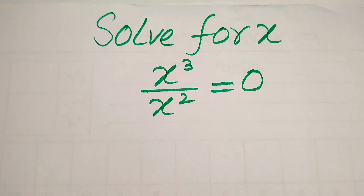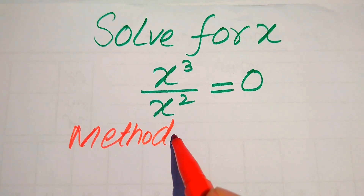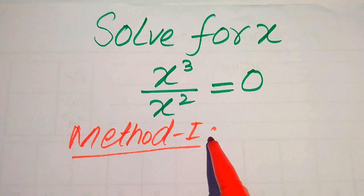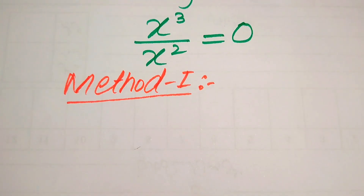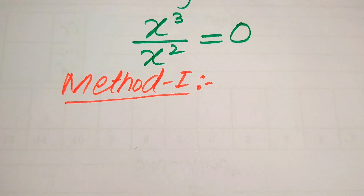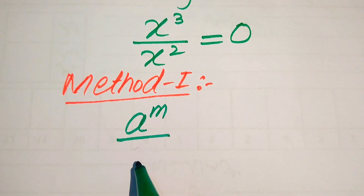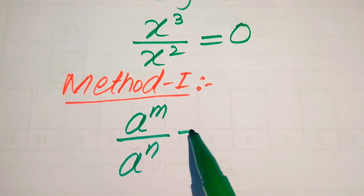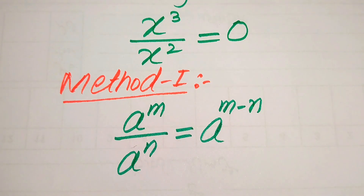We will solve this problem using two methods, and I hope you like both of these methods. If you have any other method in mind, please don't hesitate to write it in the comment section. In the first method, we use the exponent law: if we have a to the power of m divided by a to the power of n, it equals a to the power of m minus n.